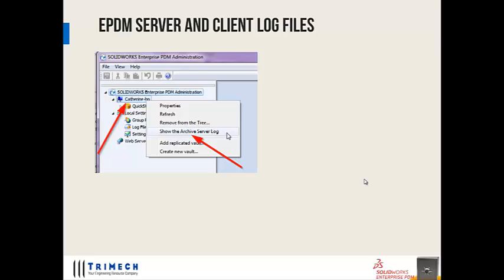Every client install of Enterprise PDM should have the Administration Tool installed on the computer. That Administration Tool gives you access to the Archive Server Log. Right-clicking on the Archive Server listed inside of the Administration Tool will give you an option to click on Show the Archive Server Log. You do have to have appropriate rights or permissions to access and see this Archive Server Log file.